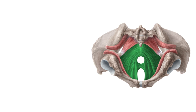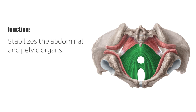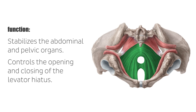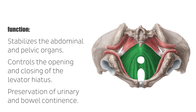Through its tonic activity, the levator ani stabilizes the abdominal and pelvic organs on the one hand, and controls the opening and closing of the levator hiatus on the other hand. While in quiescent state, the urethra and the rectum are mechanically closed at the levator hiatus. The muscle relaxes at the beginning of urination and defecation, and by this means the levator ani muscle plays a crucial role in the preservation of urinary and bowel continence.